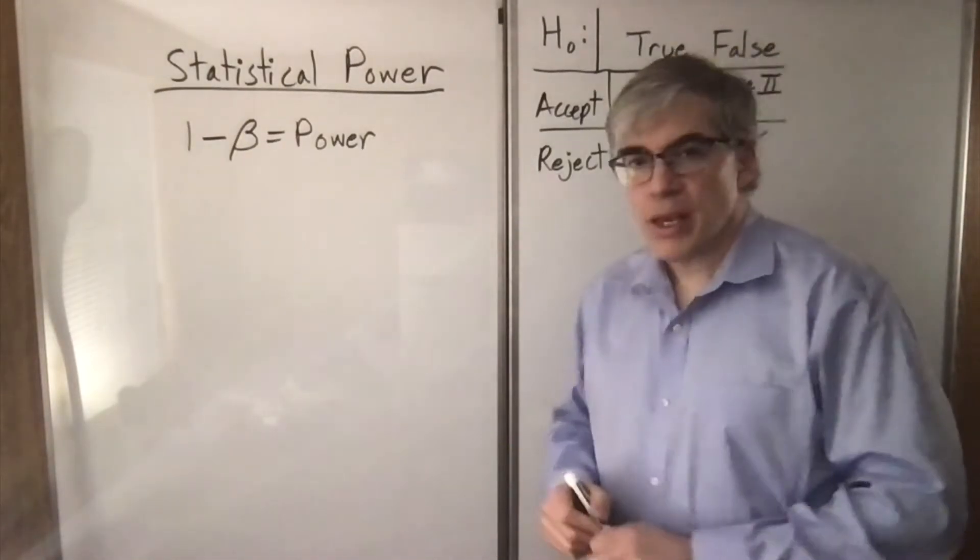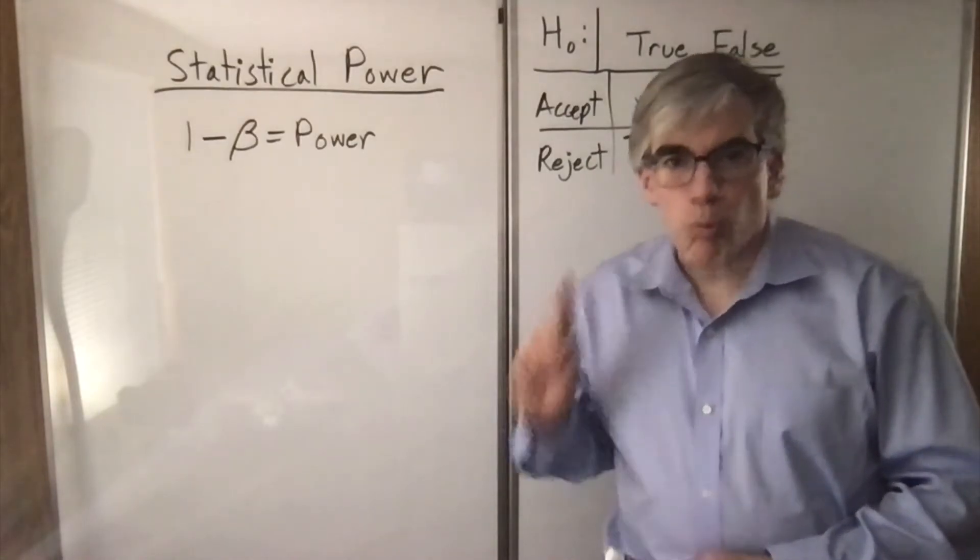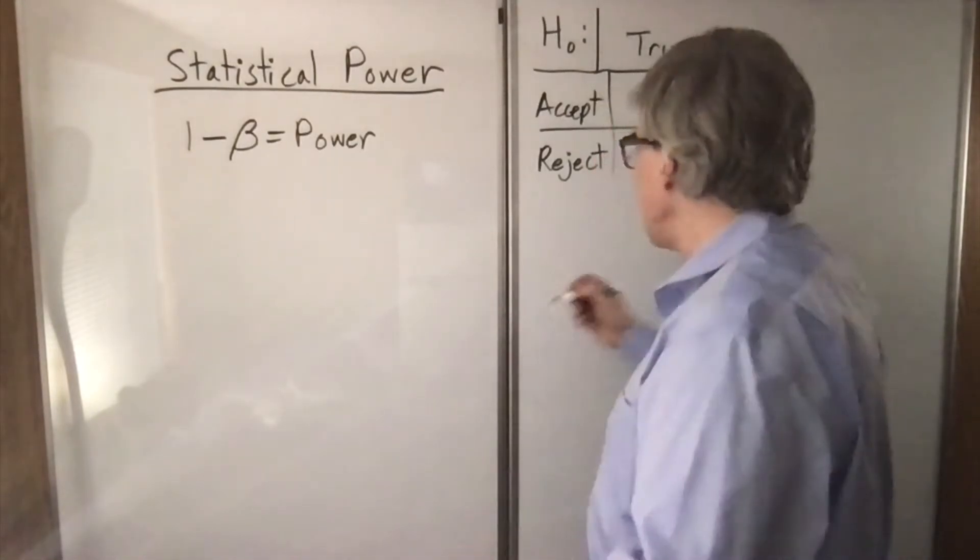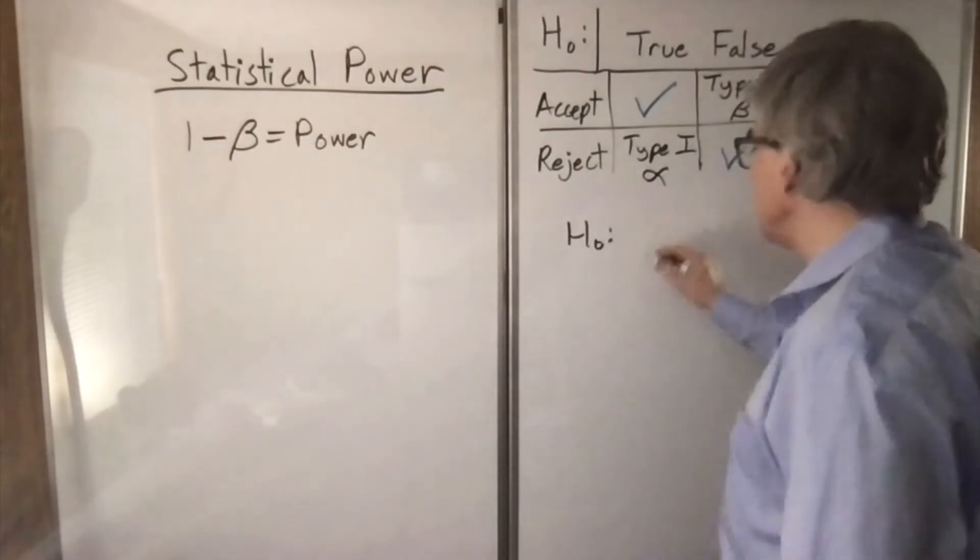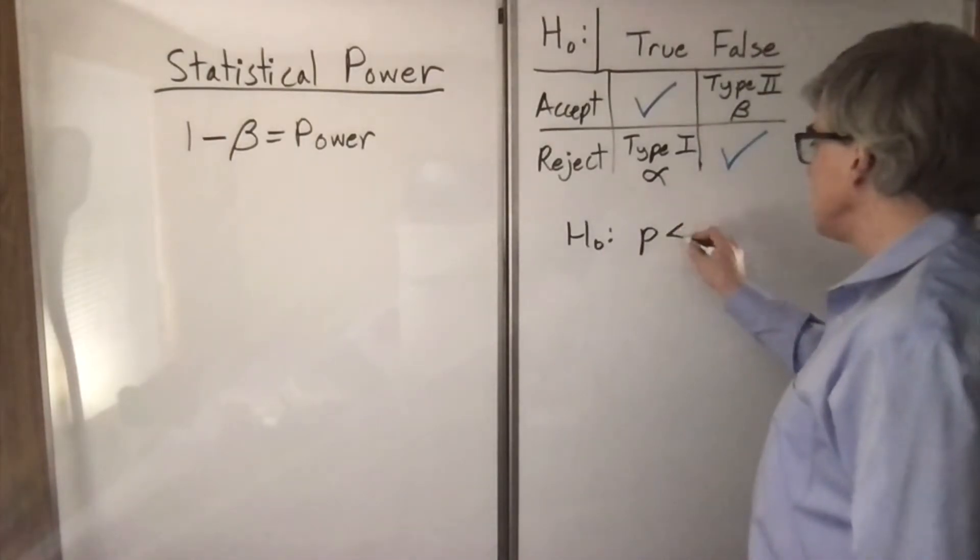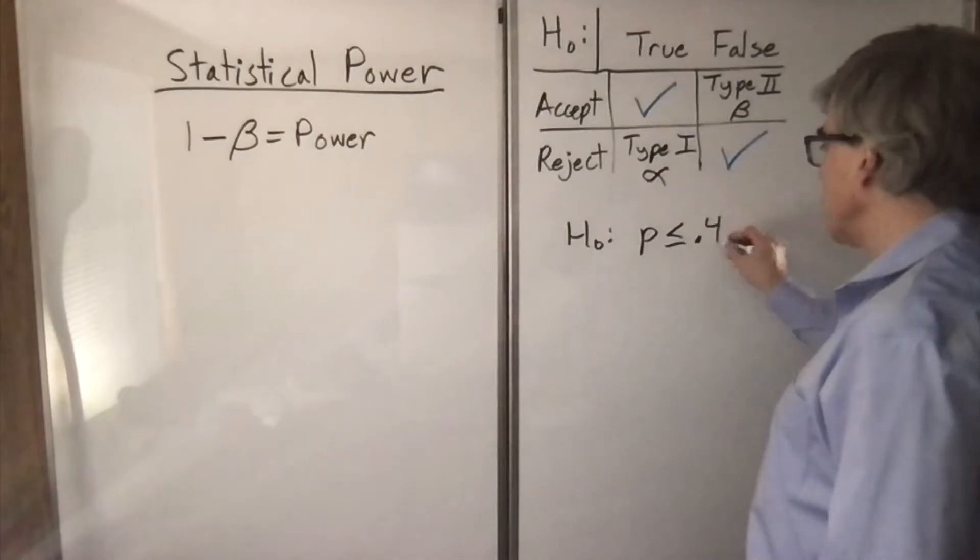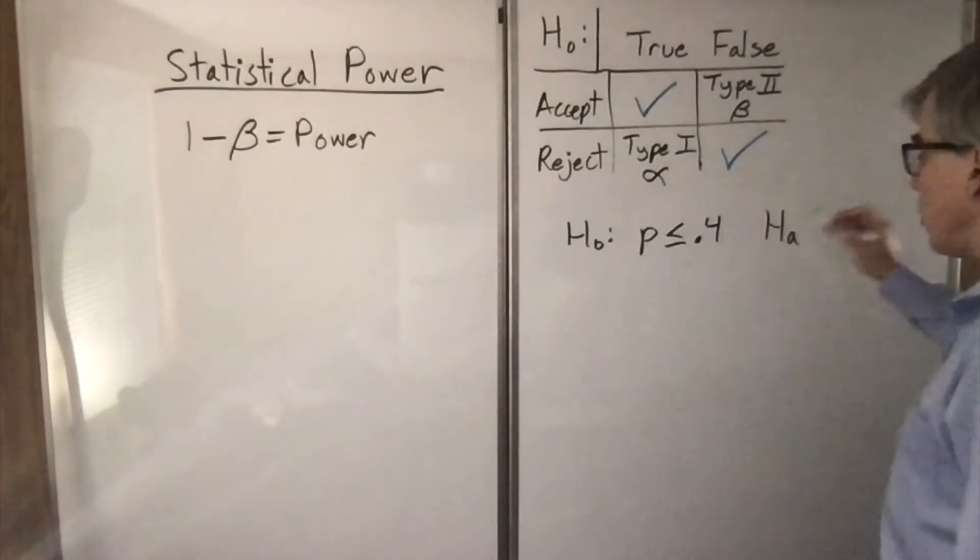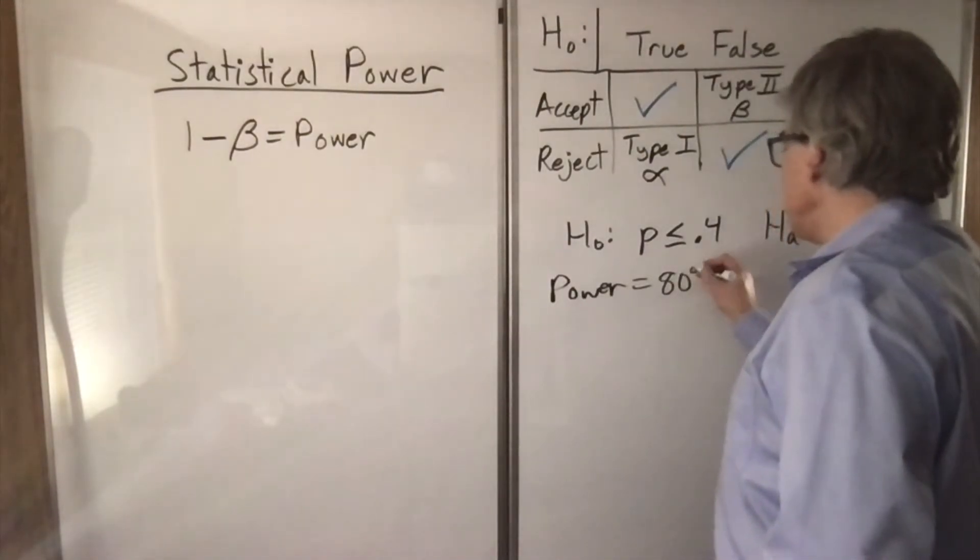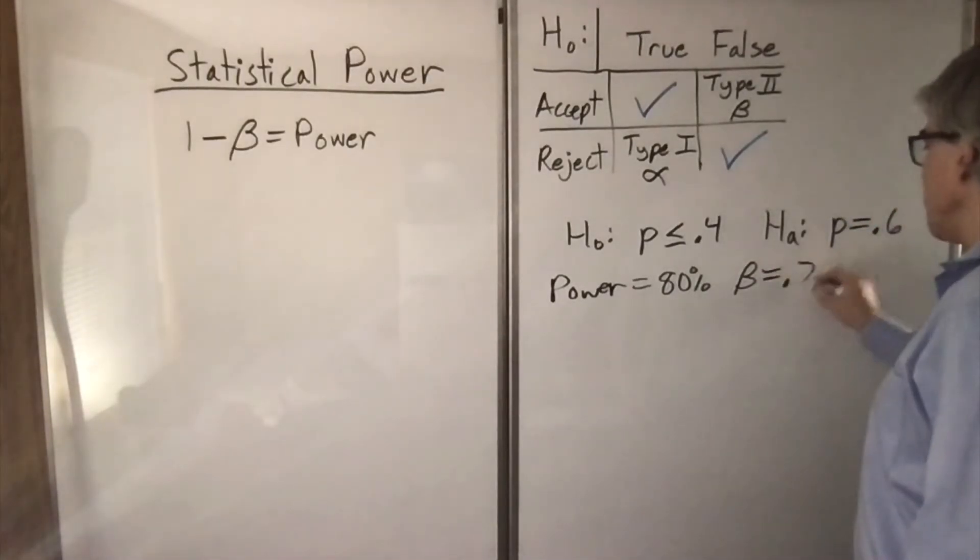So how do we do calculations with this? What's the basic setup? First of all, you need to know it's a one-tailed test. We are testing a null hypothesis, for example, that p is less than or equal to 0.4 with a specific alternative. Let's say p equals 0.6. So if the power is 80 percent, that means beta is 0.2.